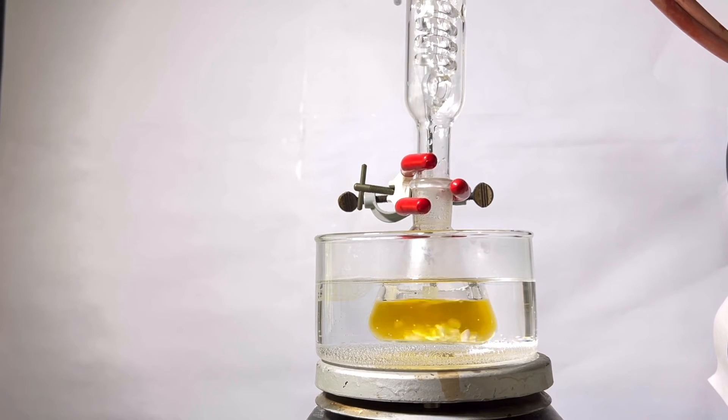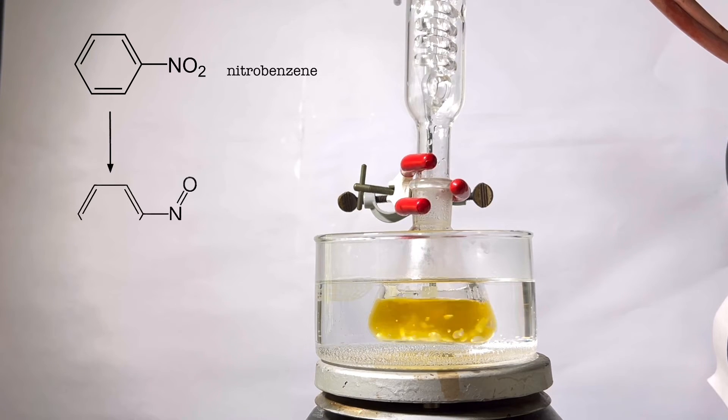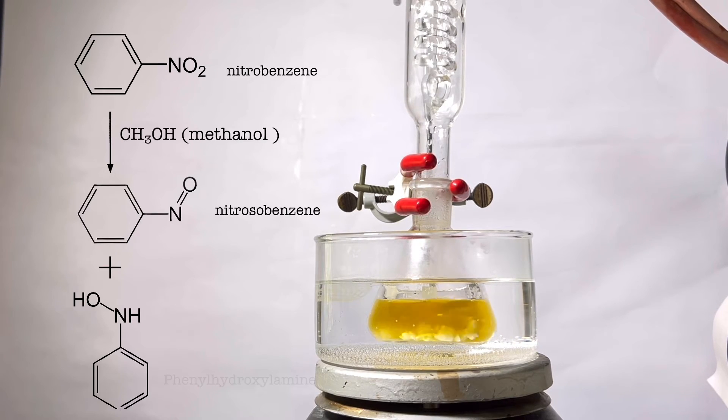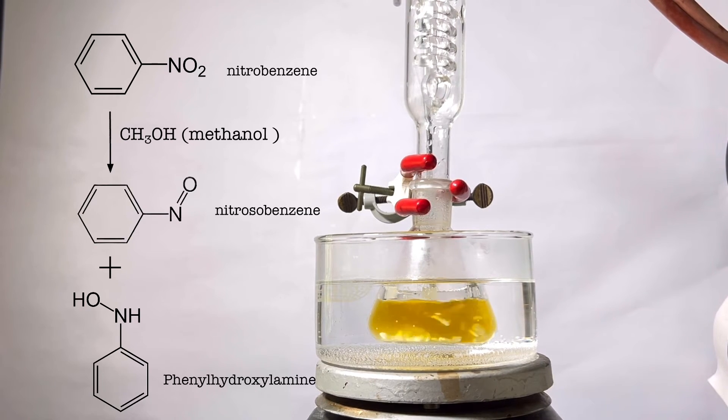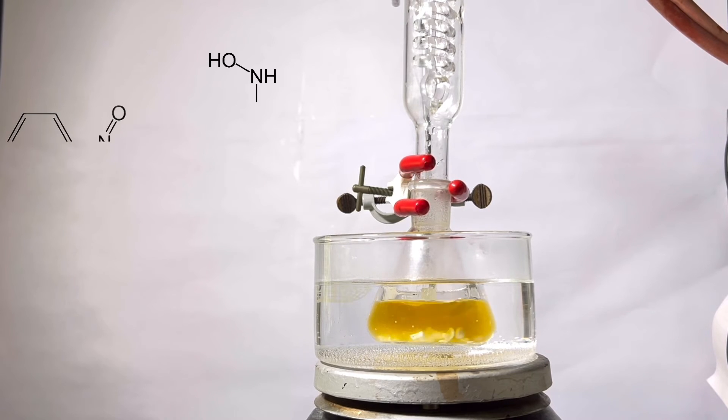While it is getting refluxed, let us go through the chemical reaction that is going on here. Nitrobenzene is partially reduced by methanol to form the intermediates nitrosobenzene and phenylhydroxylamine. Later, the intermediates nitrosobenzene and phenylhydroxylamine condense to form the product azoxybenzene.